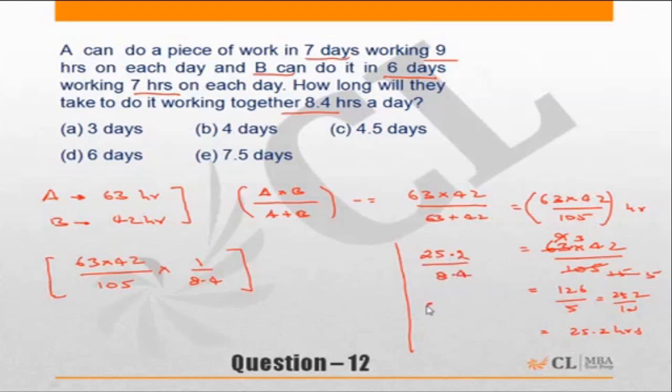Since the time taken is 25.2 hours and they will be working 8.4 hours per day, so upon 8.4, which is equal to 252 upon 84, which is equal to 84 into 3, 3 days.